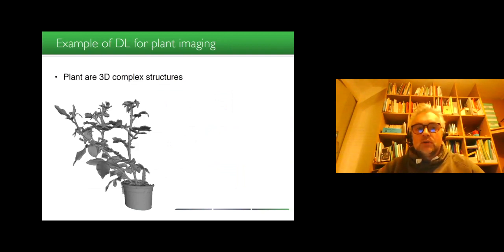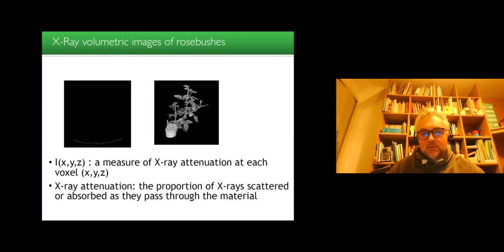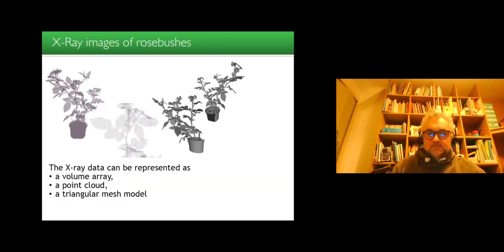As a second use case of an example of deep learning for plant imaging we have performed in our group recently, we focused on plants that we consider as 3D complex structures. So you can see here a 3D scan of an image of a plant, which has been acquired with X-ray volumetric images, that is a rose bush. And we acquired these images on our X-ray system, where the intensity is a measure of the X-ray attenuation at each voxel. So the X-ray attenuation is the proportion of X-rays scattered or absorbed as they pass through the material.